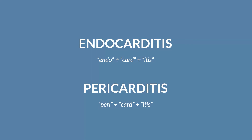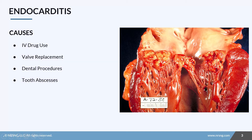This lesson covers endocarditis and pericarditis, both conditions that affect the heart. Breaking down the medical terminology: both words contain 'itis,' meaning inflammation, and 'card,' referring to the heart. 'Endo' means inside and 'peri' means around, so endocarditis is inflammation inside the heart and pericarditis is inflammation around the heart.